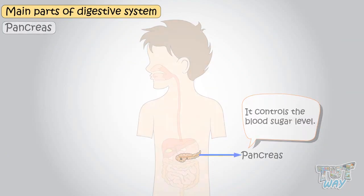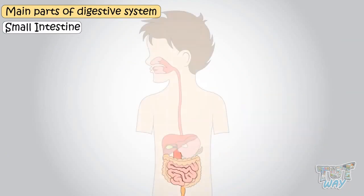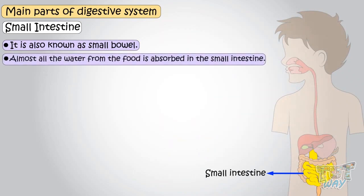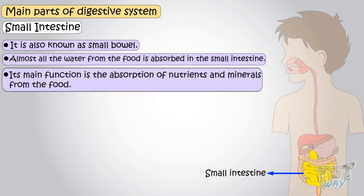Now here is the small intestine. It is the part of the GI tract that begins from the stomach and ends in the large intestine. It is also known as the small bowel. Almost all the water is absorbed from the food here. The most important and main function of the small intestine is absorption of nutrients and minerals from food.